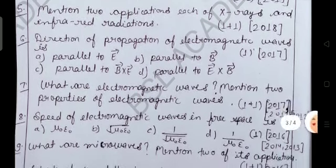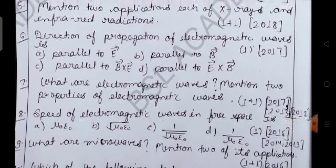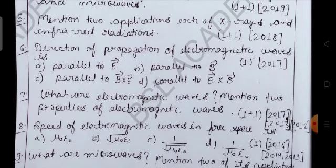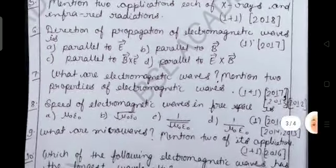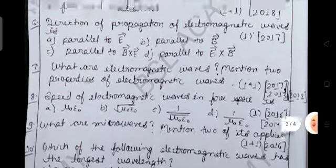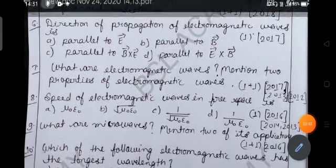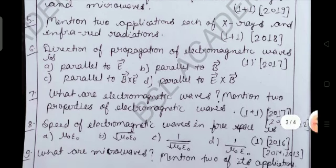Question number six: direction of propagation of electromagnetic waves is what? Parallel to E (here E stands for electric field), parallel to B (B stands for magnetic field), option c parallel to B cross E - this is cross product. So in your previous classes you might have read what is vector product. Now next option is parallel to E cross B.